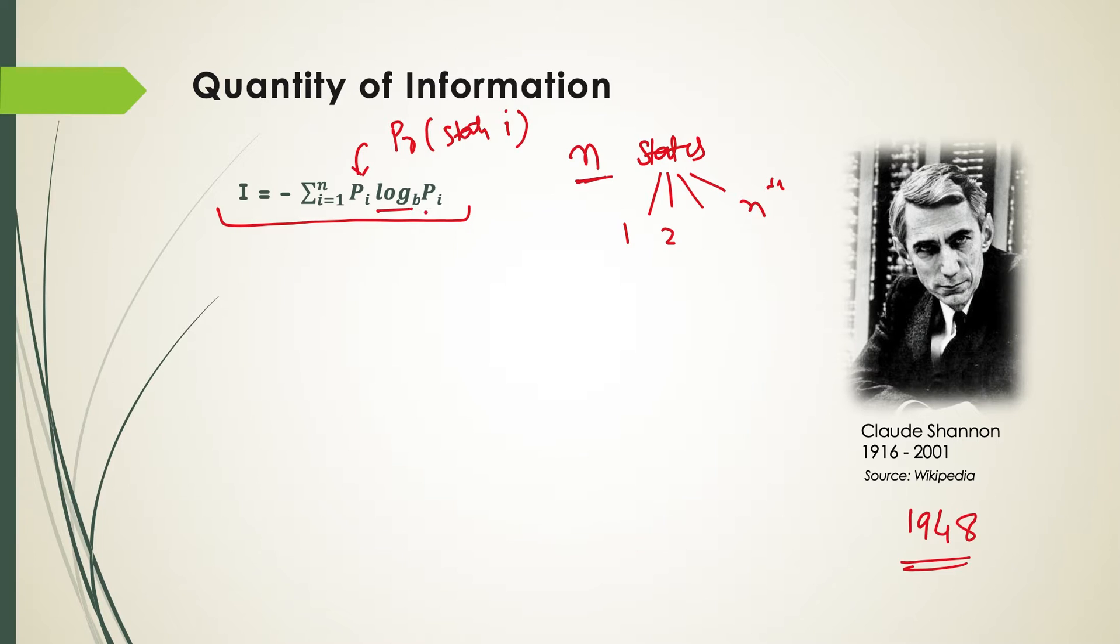And this is the logarithm base B of P_i. Again, this same probability. And we can simplify it for a computational system where the probability of all the states is equal. Then P_i will naturally become 1 over n because there are n states and all the states are equiprobable. So it will become 1 over n. So this formula becomes minus summation 1 to n of 1/n log_B(1/n).